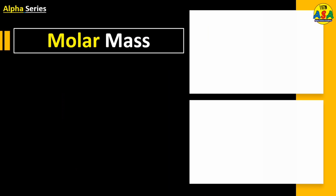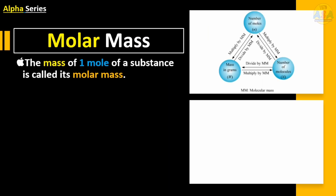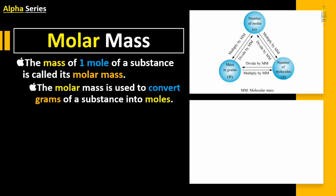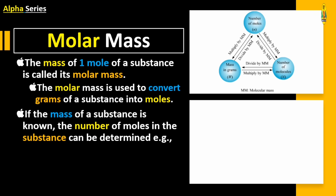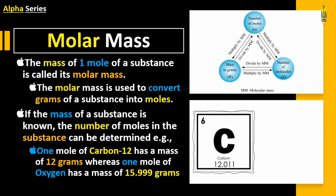Molar mass: The mass of one mole of a substance is called its molar mass. Molar mass is used to convert grams of a substance into moles. If the mass of a substance is known, the number of moles in the substance can be determined. For example, one mole of Carbon-12 has a mass of 12 grams.